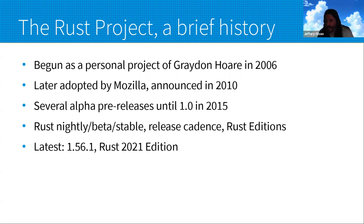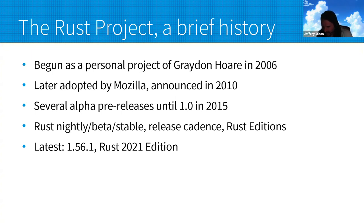Since the 1.0 release, changes to Rust have been organized into three rolling offerings. There's a nightly version built and released nightly based on the passing state of the trunk of the Git repository. They have a rolling beta release that is updated every six weeks, and things that graduate out of the nightly go into the beta release and stay there for a while. Finally, there's a stable release that contains features graduating out of beta on a rolling consistent six-week basis. The latest release is Rust 1.56.1.